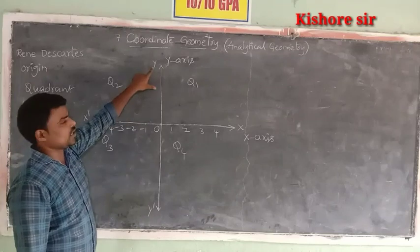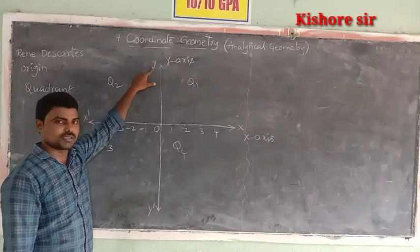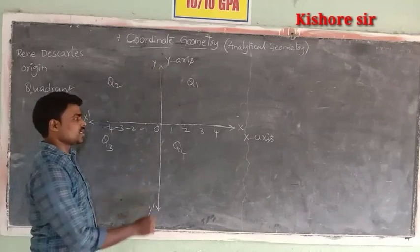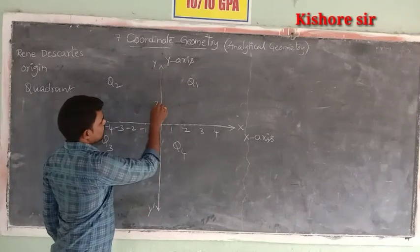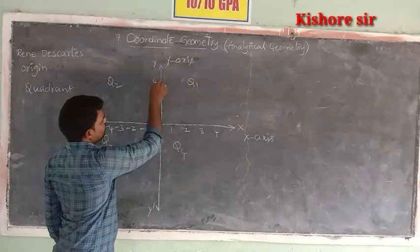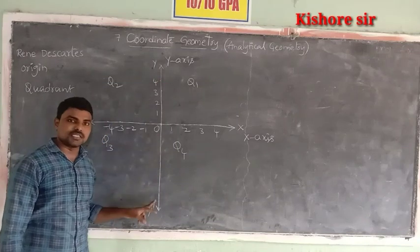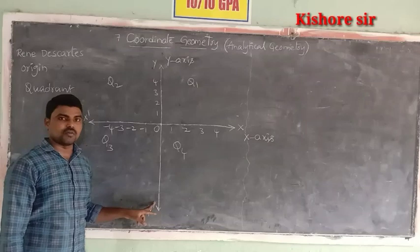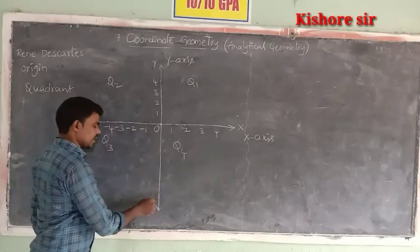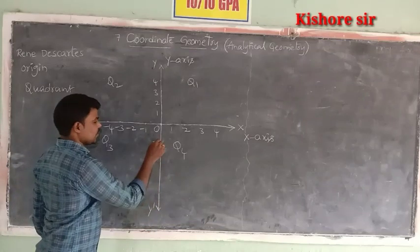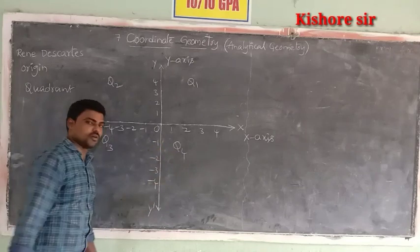Similarly, OY is the positive direction of the y-axis. So take some positive integers on OY: one, two, three, four. And OY dash is the negative direction of the y-axis. So take some negative integers on OY dash: minus one, minus two, minus three, minus four.